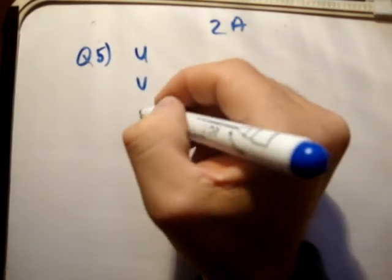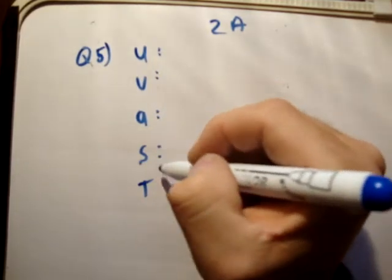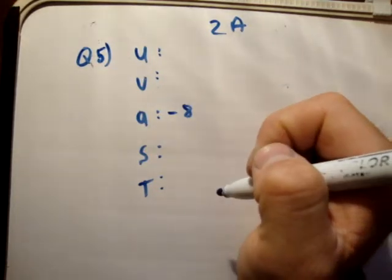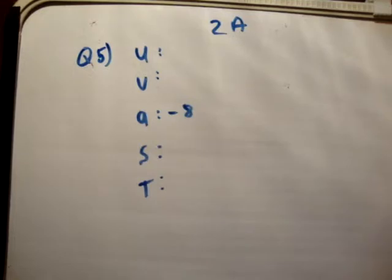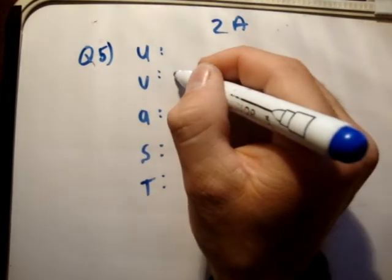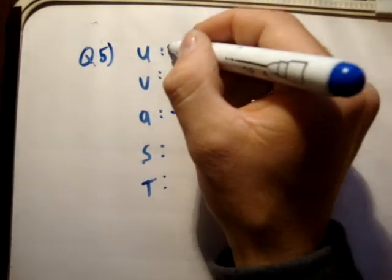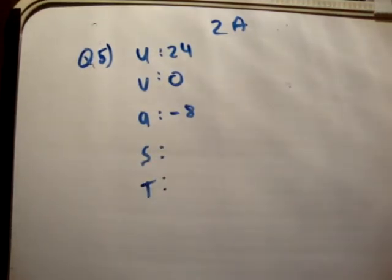We write U, V, A, S and T. Maximum deceleration of 8 meters per second. The shortest possible distance to stop means the stopping velocity is 0 meters per second. In part one, we're given an initial speed of 24 meters per second and asked to find both S and T.